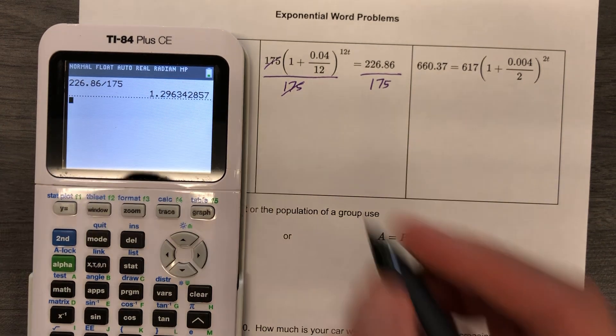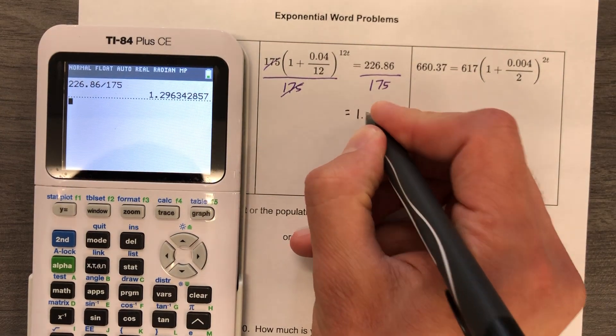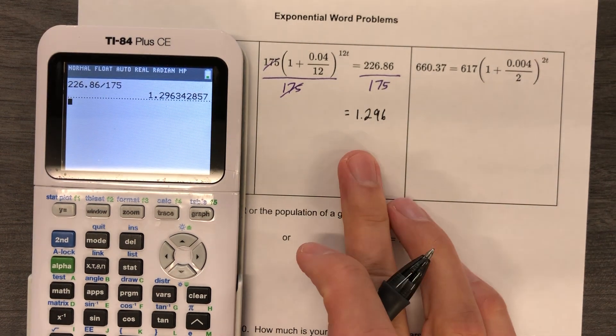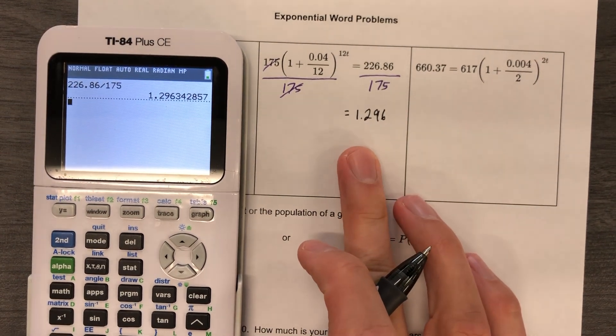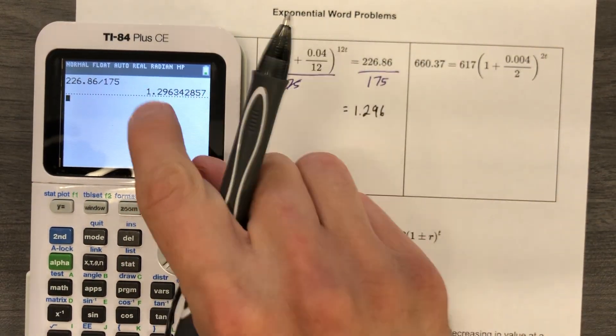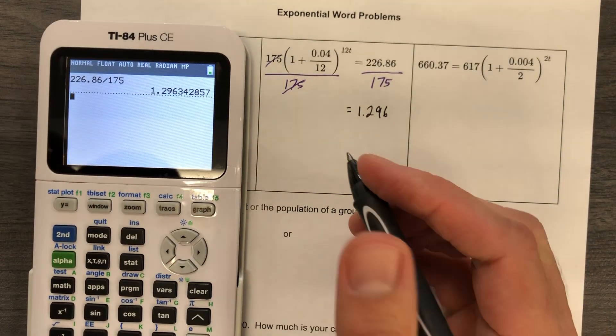Now, if you write down, for example, 1.296, and you say, that's it. I don't want to write anymore. That's fine. That's cool. But in the calculator or Desmos or whatever, you're going to need that whole thing. You're going to copy that whole thing and use it.